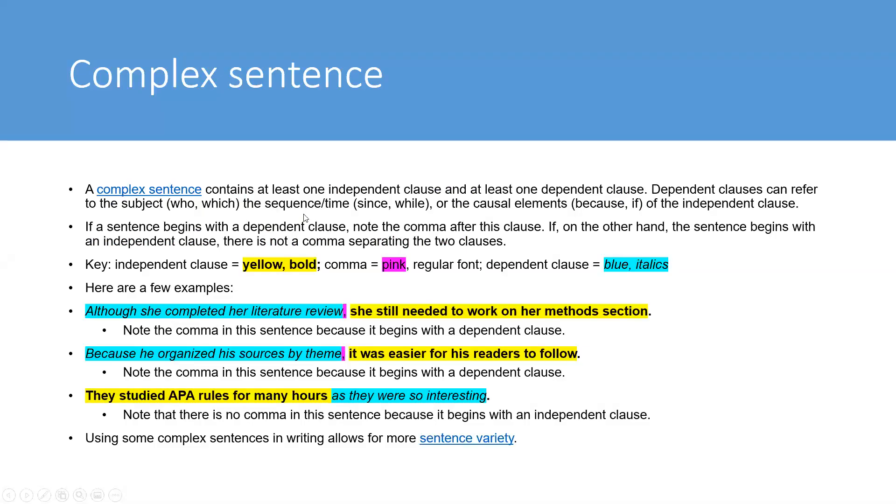What is a complex sentence? Well, a complex sentence contains at least one independent clause and at least one dependent clause. Dependent clauses can refer to the subject, for example, if you use who or which, or also the sequence of time, if you use since or while, or a causal element if you use because of the independent clause. If the sentence begins with a dependent clause, note the comma after this clause. If, on the other hand, the sentence begins with an independent clause, there is not a comma separating the two clauses.